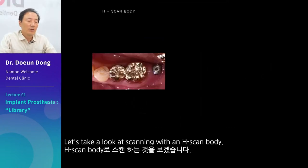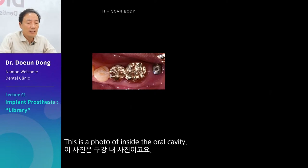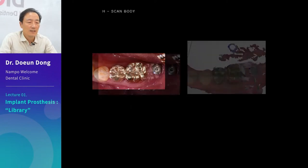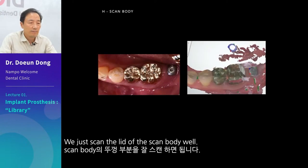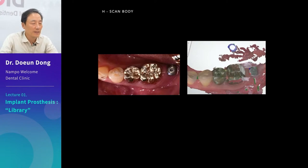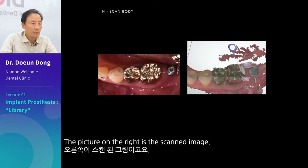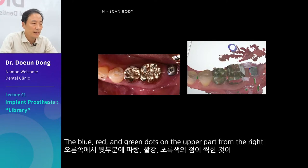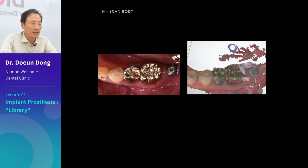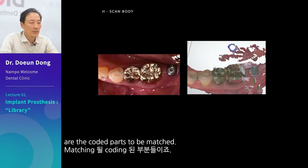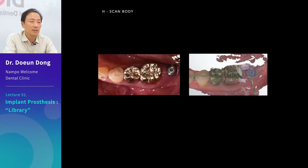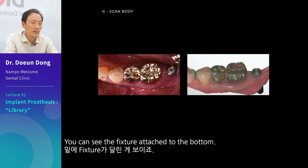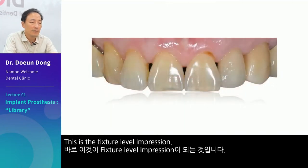Let's take a look at scanning with an H-scan body. This is a photo of inside the oral cavity. The operation was completed using an H-scan body — we just scanned the lid of the scan body well. The picture on the right is the scanned image. The blue, red and green dots on the upper part from the right are the coated parts to be matched. We match these and put them together, and you can see the fixture attached to the bottom — this is the fixture level impression.